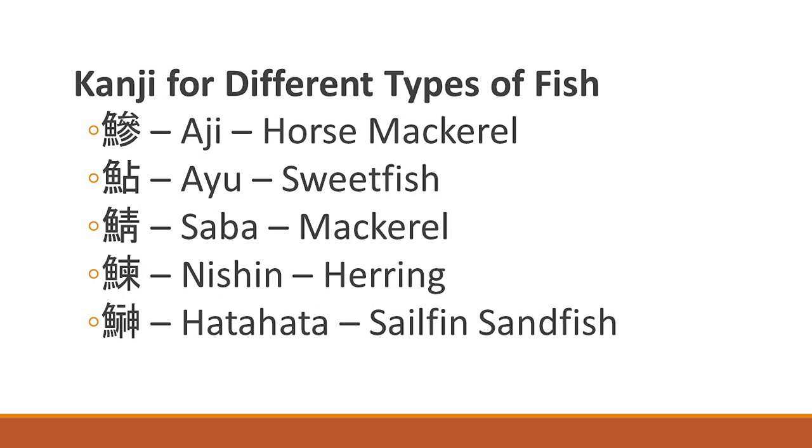Beef, chicken, mutton — those are meats which are not native to the Japanese. Due to Japan being an island nation, fish plays a very important part in their staple diet, as you can tell. Here are some examples of kanji for different types of fish commonly found in Japanese cuisine.